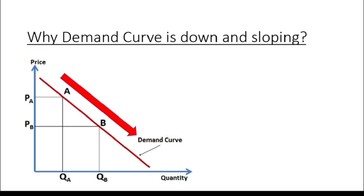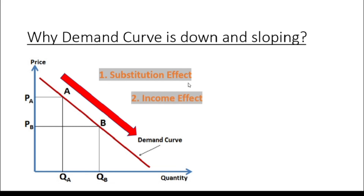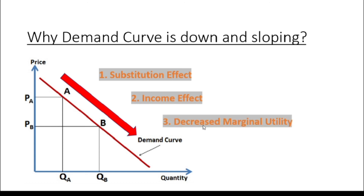In summary, there are three reasons why the demand curve is downward sloping: number one, substitution effect; number two, income effect; and number three, decreased marginal utility.